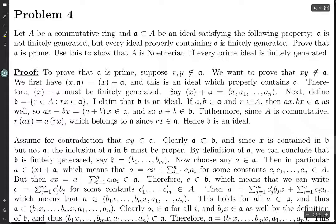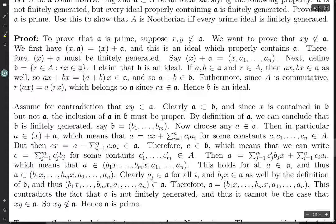Since B is generated by the bⱼ's, we can write c as a sum of cⱼ'·bⱼ for some coefficients. So a equals — we take the cx term and replace it with this sum — giving us the sum of cⱼ'·bⱼ·x plus the remaining terms. Therefore a is in the ideal generated by the bⱼx's and the aᵢ's, and this holds for every a in A, so A is contained in that ideal.